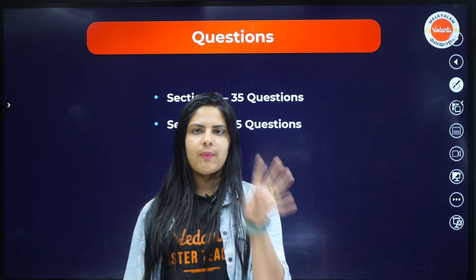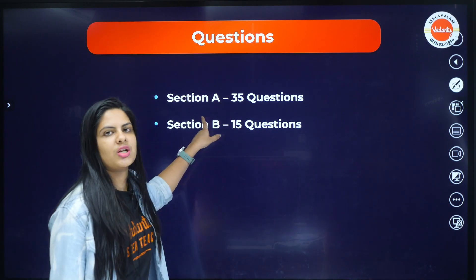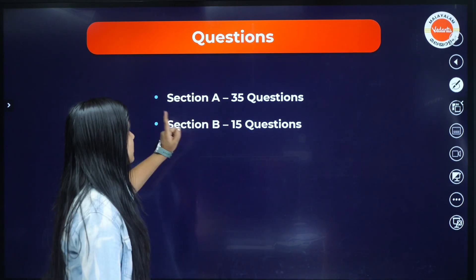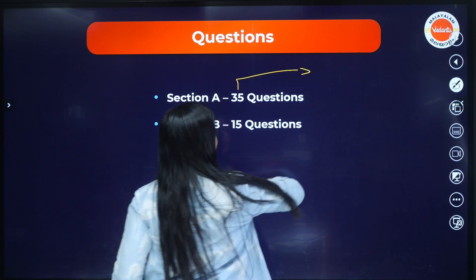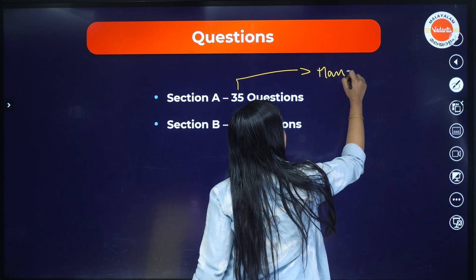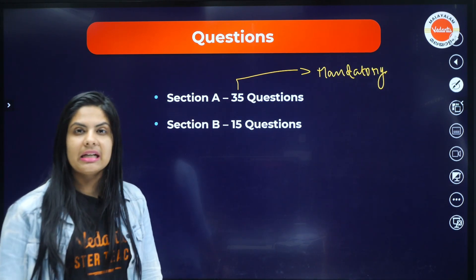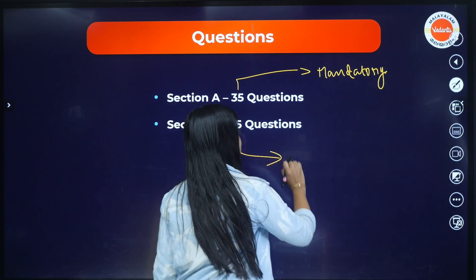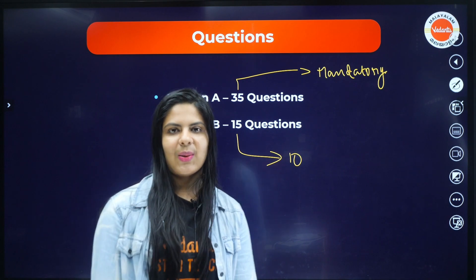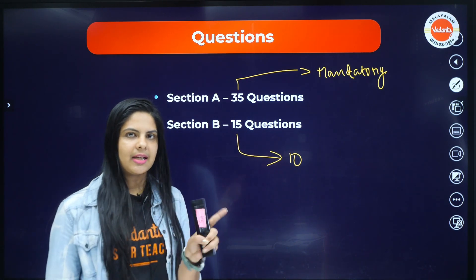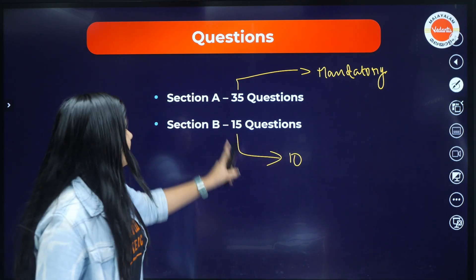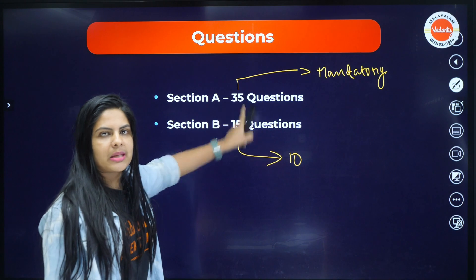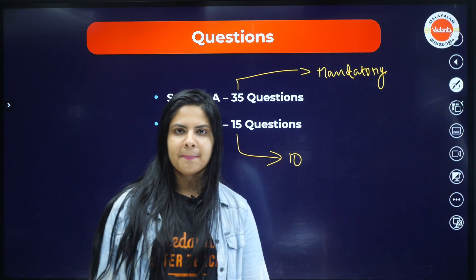Each subject has 45 questions total: Section A has 35 questions and Section B has 15 questions. Section A questions are mandatory — you must answer all 35. Section B has 15 questions but you only need to attempt 10. So it is 35 plus 10 equals 45 total attempted questions per subject. This applies to Physics, Chemistry, and Biology.